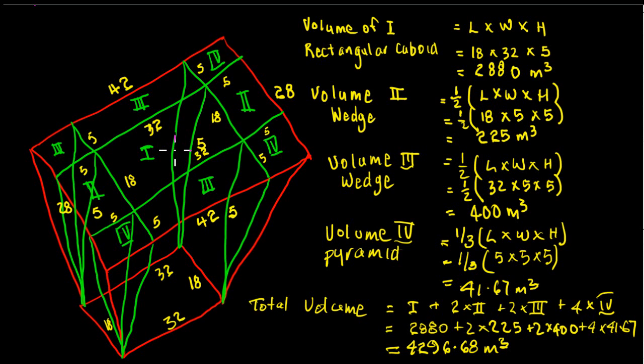So we have shape one here, which is just a rectangular cuboid, and shapes two and three are a wedge. So a wedge is just half a rectangular cuboid really. So just as the triangle was half the area of a rectangle, so the wedge is half the area of a rectangular cuboid.